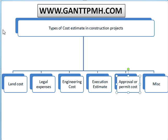In miscellaneous cost, we can have transportation cost, incentive costs, and other miscellaneous expenses — typically around 4 to 5% of the overall project cost. This is a brief overview of the types of cost estimates in construction projects. If you want to learn these topics in detail, there will be a separate lecture. Thank you.